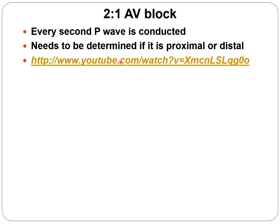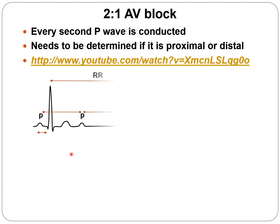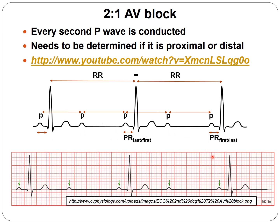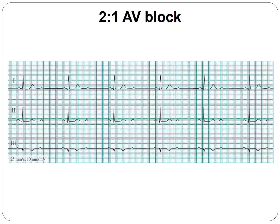In a 2:1 AV block, every second P is not followed by a QRS. Clinically, this is considered a serious situation and a pacemaker is usually implanted immediately, though it should be determined whether it is Mobitz Type 1 or 2. The rhythm is regular but bradycardic, with twice as many P waves as QRS complexes. The green arrows show the P waves, and the QRS complexes are very slow.